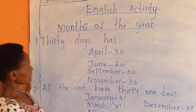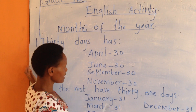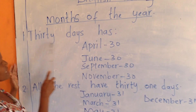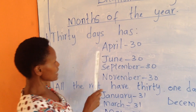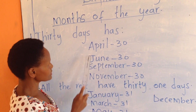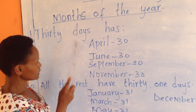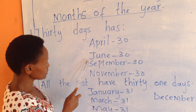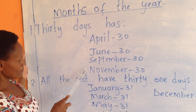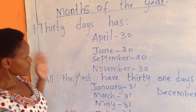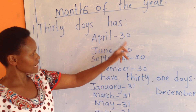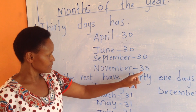We want to see how many days each month has. These are the months that have 30 days: April, June, September and November. There are only four months in a year with 30 days.